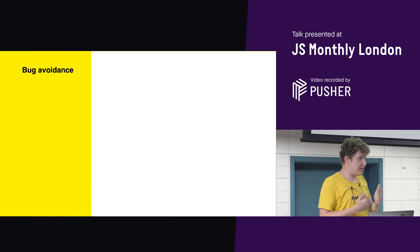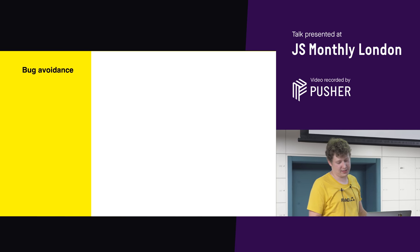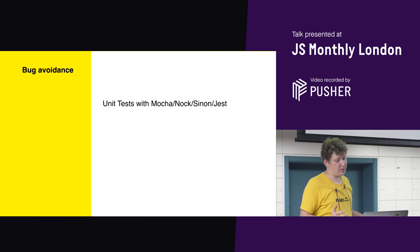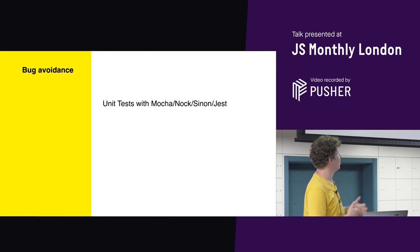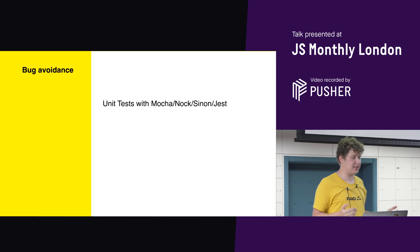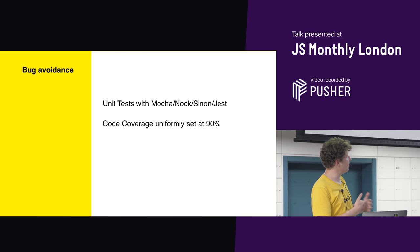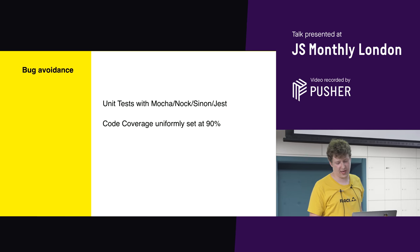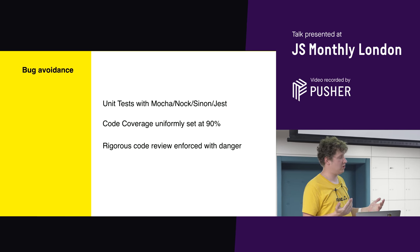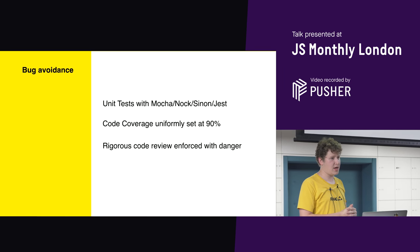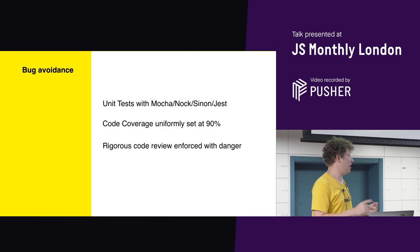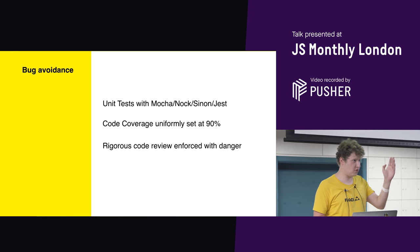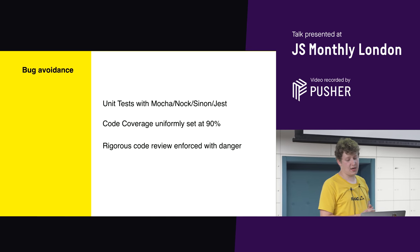What about expensive bugs — the legally problematic ones? We write unit tests in Mocha, Nock, and Sinon on the back end, and Jest on the front end. We have uniformly set code coverage bars at 90% across the entire codebase. We apply code review with exceptional rigor and use a tool called Danger, which allows us to enforce things like commit message lengths, screenshots uploaded to pull requests, PR message lengths, and links to issue tracking systems.